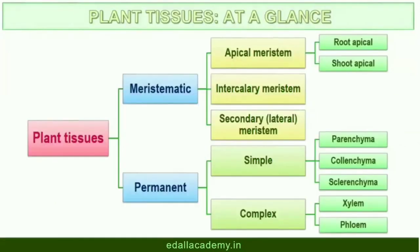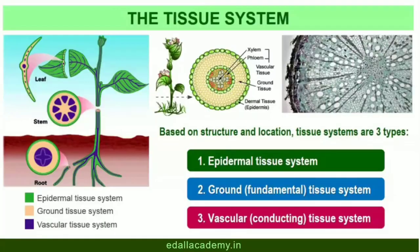6.2 The Tissue System. We were discussing types of tissues based on the types of cells present. Let us now consider how tissues vary depending on their location in the plant body. Their structure and function would also be dependent on location. On the basis of their structure and location, there are three types of tissue systems: the epidermal tissue system, the ground or fundamental tissue system, and the vascular or conducting tissue system.